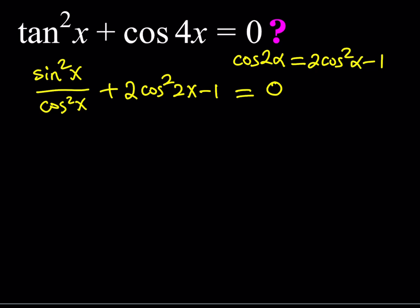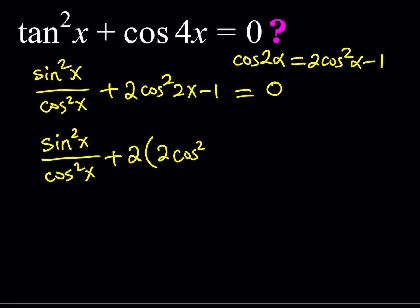We still have cosine squared x along with cosine squared of 2x, so we need to use the double angle formula one more time. Replacing cosine of 2x with 2 cosine squared x minus 1 and squaring that, then multiplying by 2 and subtracting 1, the whole thing is equal to zero.